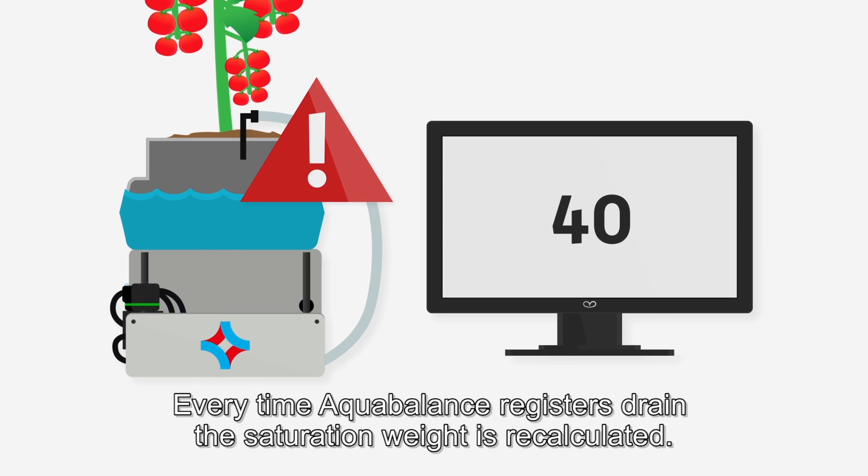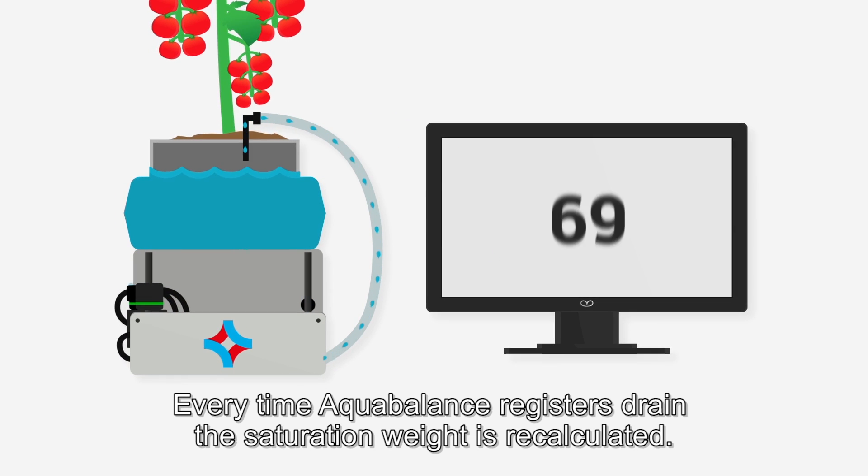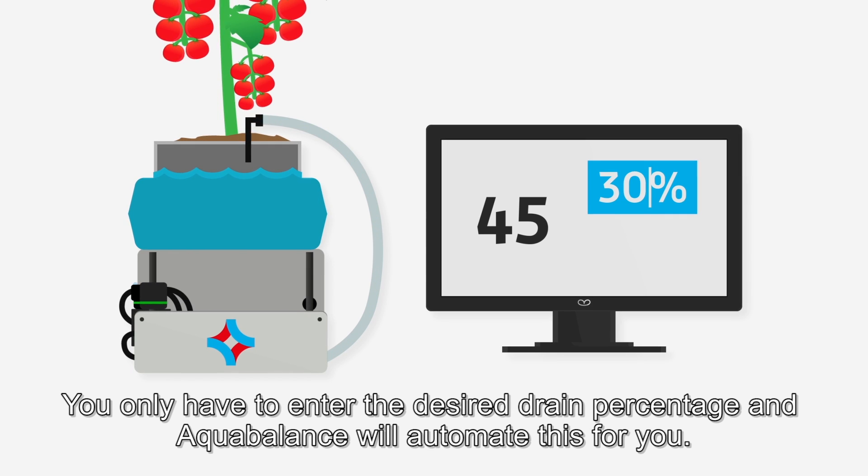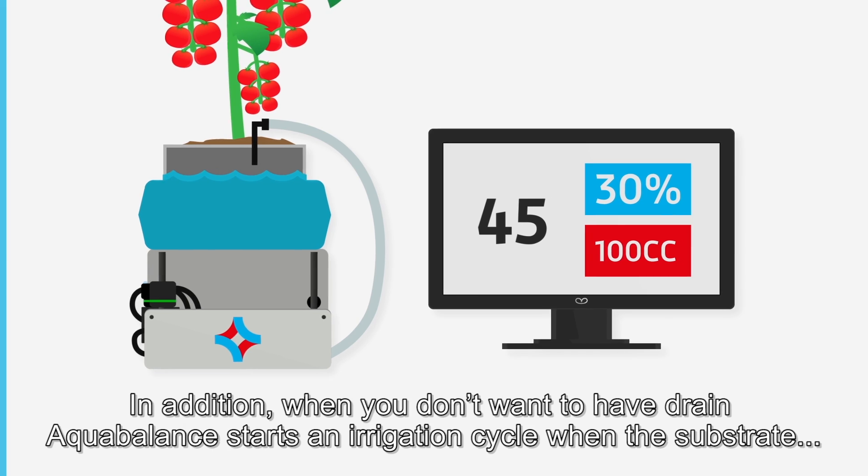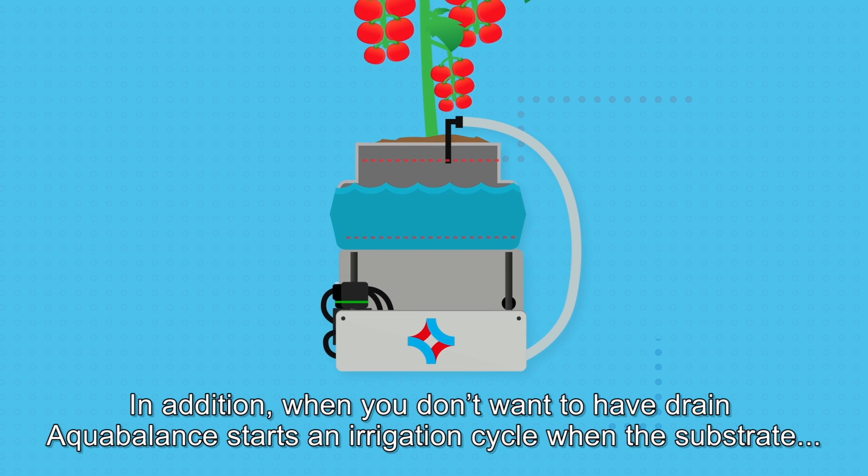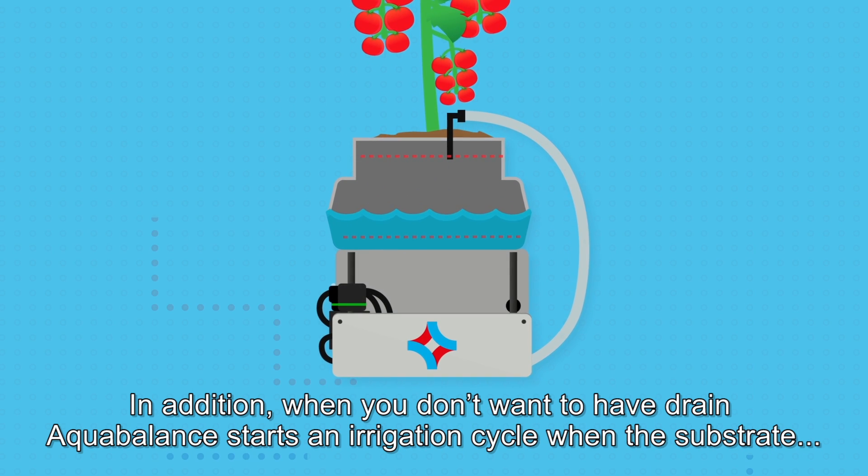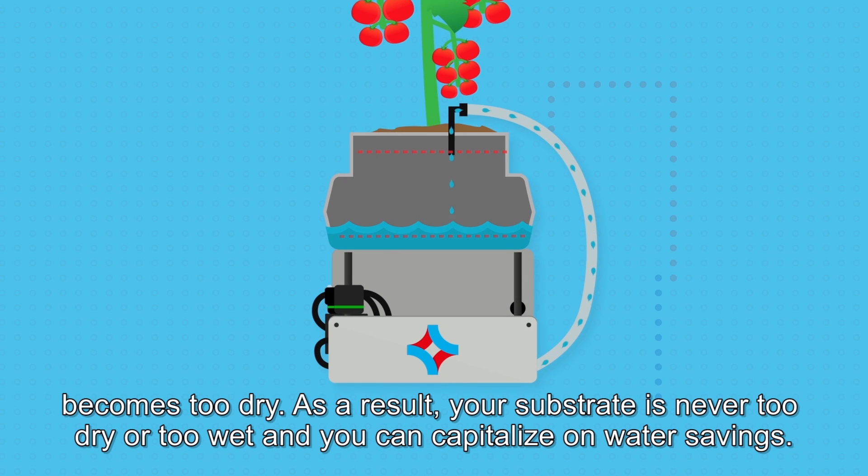Every time Aqua Balance registers drain, the saturation weight is recalculated. You only have to enter the desired drain percentage and Aqua Balance will automate this for you. In addition, when you don't want to have drain, Aqua Balance starts an irrigation cycle when the substrate becomes too dry.